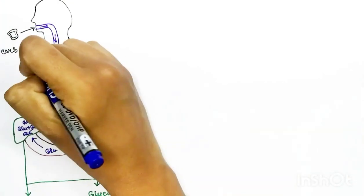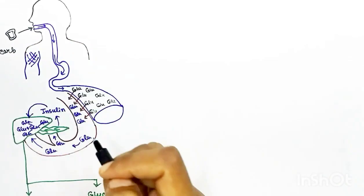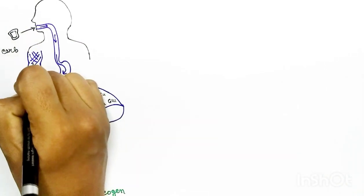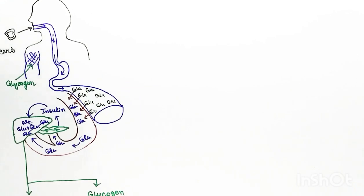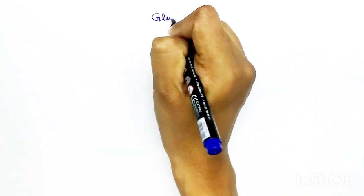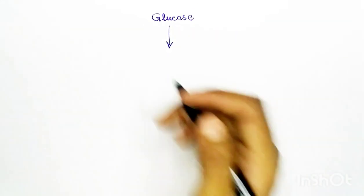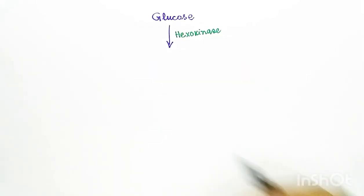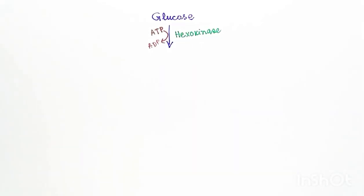In the period of fasting, that glycogen can be broken down into glucose and can be utilized by our body. Now we will see how the glycogen is produced from glucose.